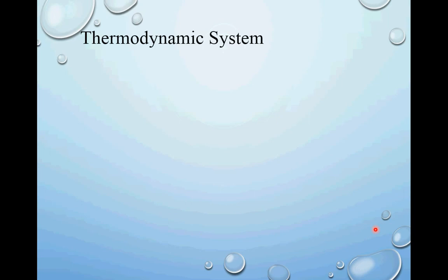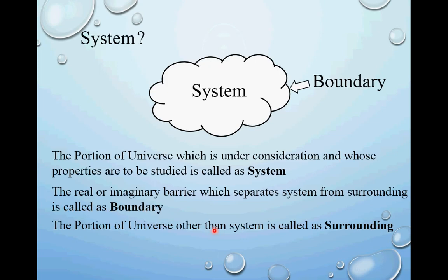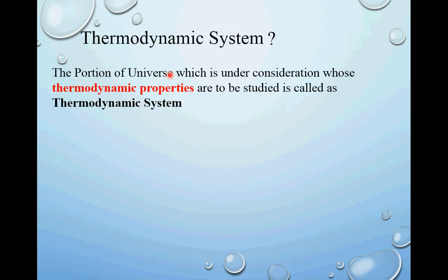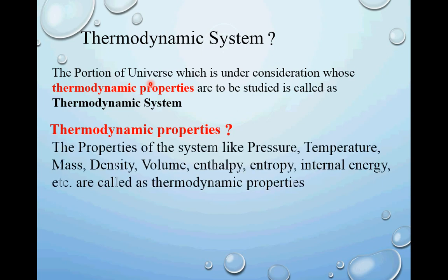A thermodynamic system is somewhat different from a general system. In a thermodynamic system, the portion of the universe under consideration whose thermodynamic properties are to be studied is called a thermodynamic system. The thermodynamic properties include pressure, temperature, mass, density, volume, enthalpy, entropy, internal energy, etc. If you are interested in studying these properties of a system, then you have a thermodynamic system.